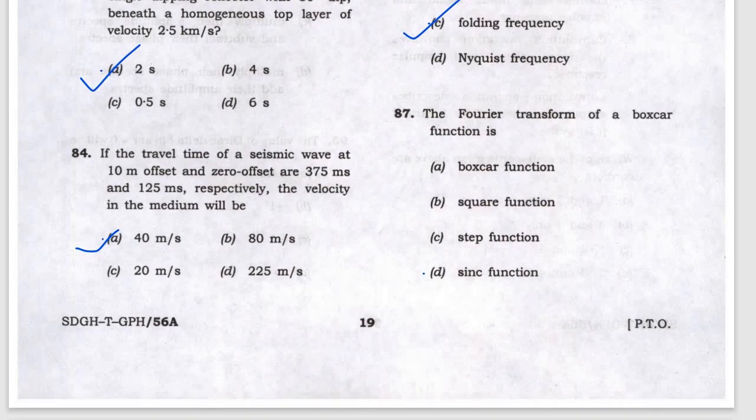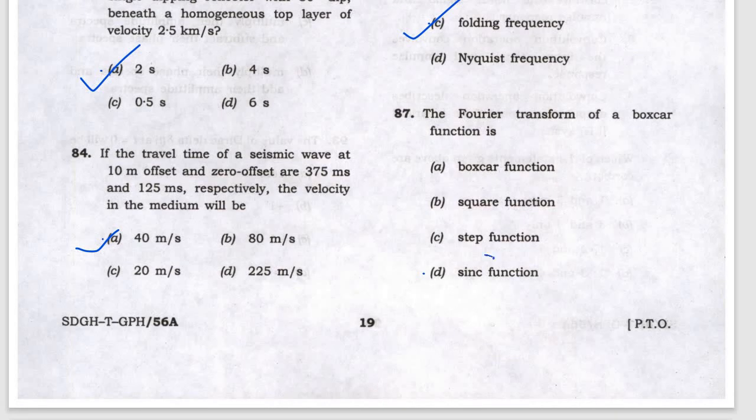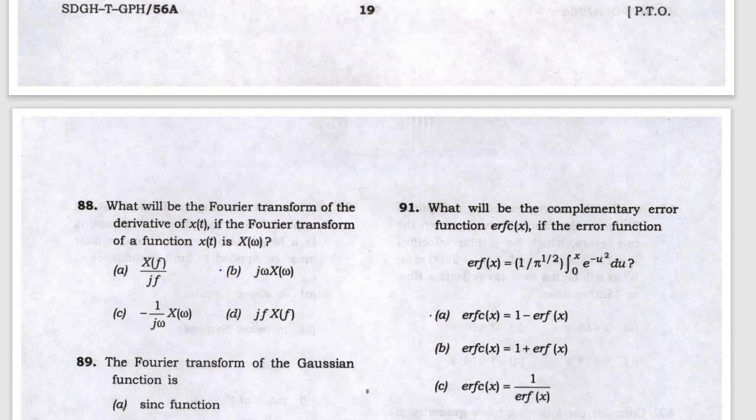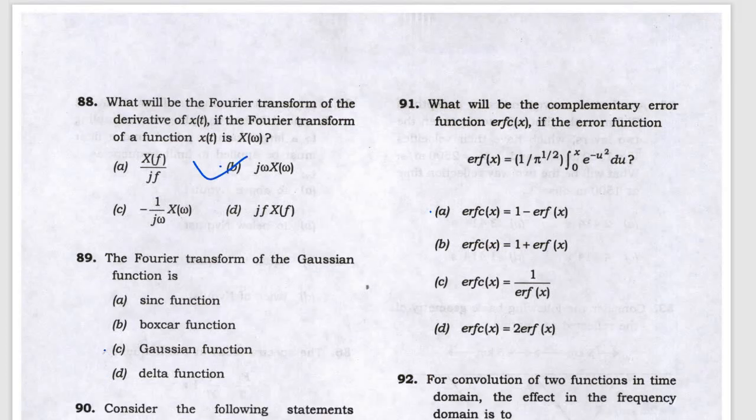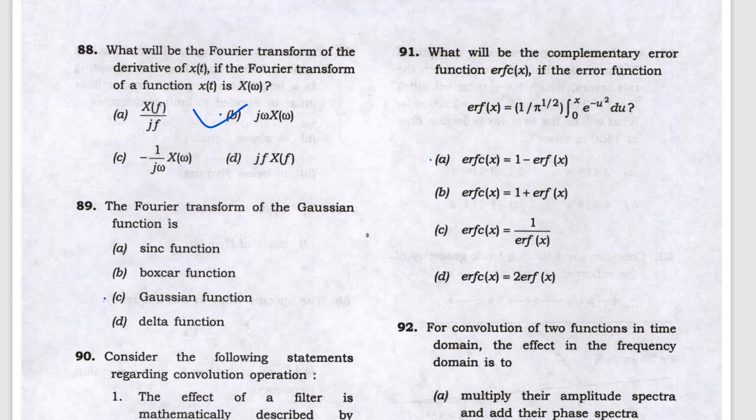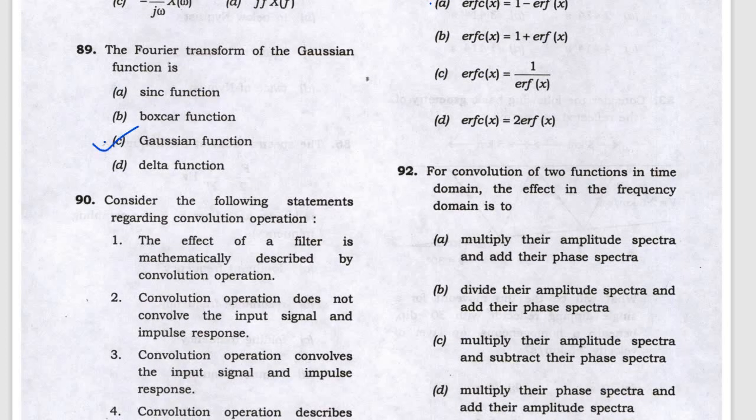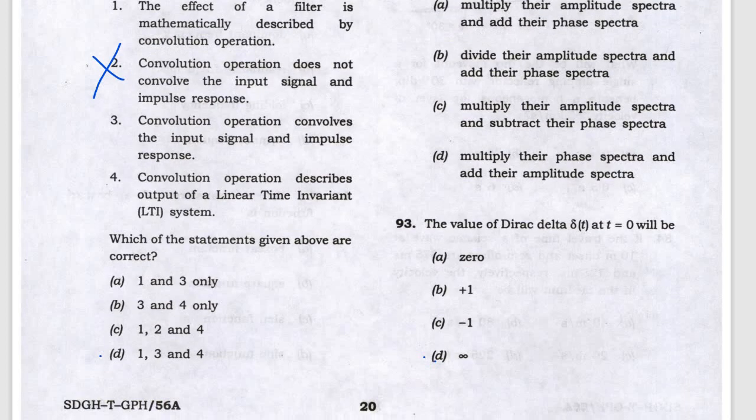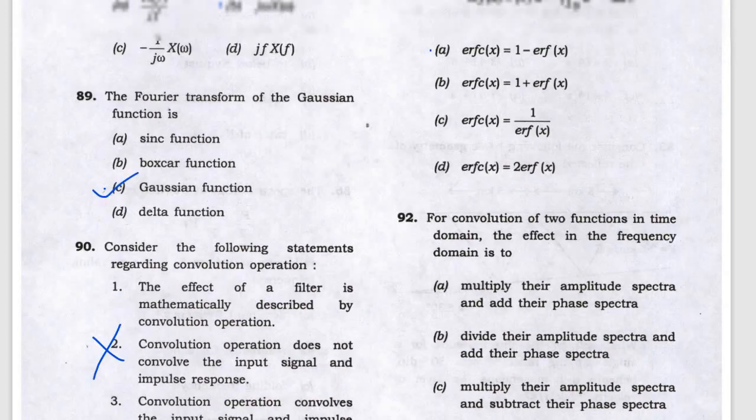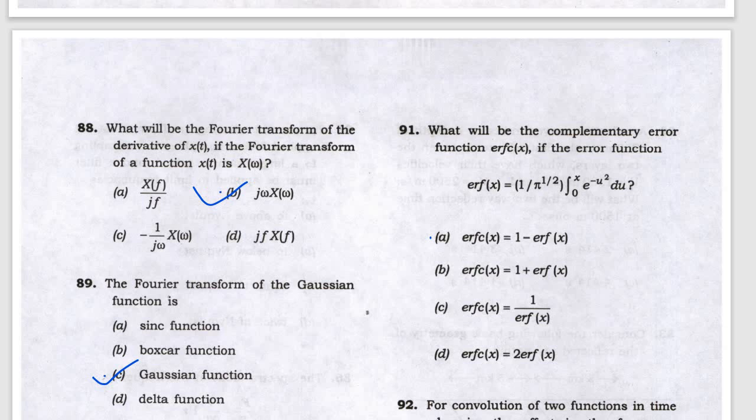The Fourier transform of the box curve function is the sinc function. For Fourier transform, answer is B. The Gaussian function's Fourier transform is the Gaussian function. Regarding convolution, the second statement is not correct because a person does not convolve, so answer is D. The error function answer is A.